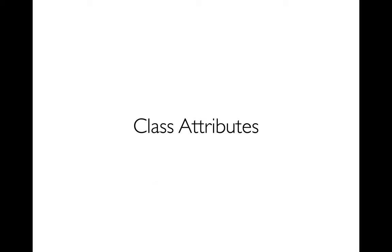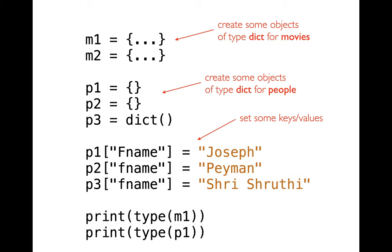The first thing I want to talk about is classes and an analogy between classes and class objects to dictionaries. With dictionaries, you've seen that you can put a lot of different kinds of information in there. For example, I could create a dictionary to represent a movie object — I could have a bunch of different movies, all as dictionaries — and those would have keys and values giving me things like the movie title and the year the movie was released.